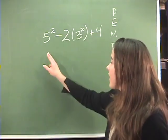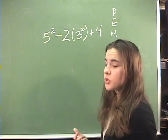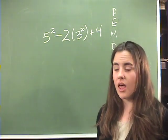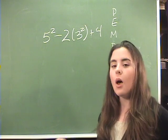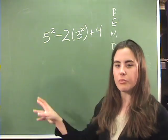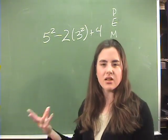Let's say we have a problem like this: five squared minus two times three squared plus four. That's a lot of operations in one problem. But when we have our order of operations, we can break it down into steps we can follow, and it's not so overwhelming.